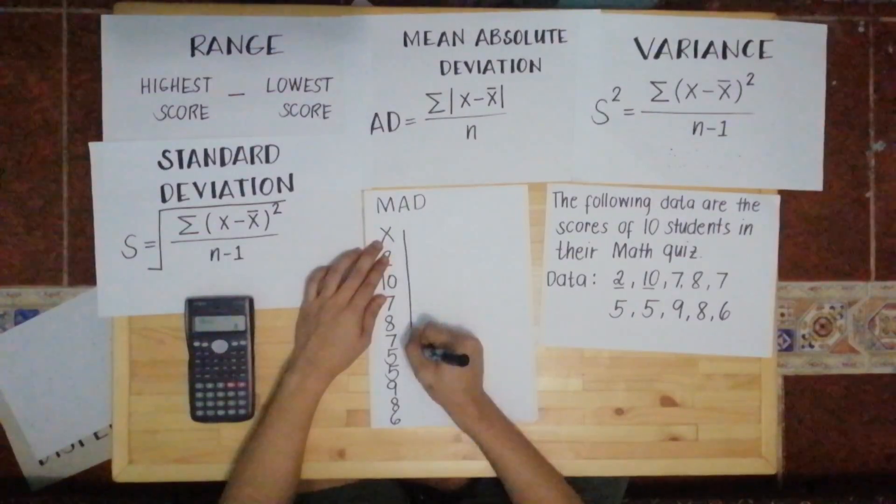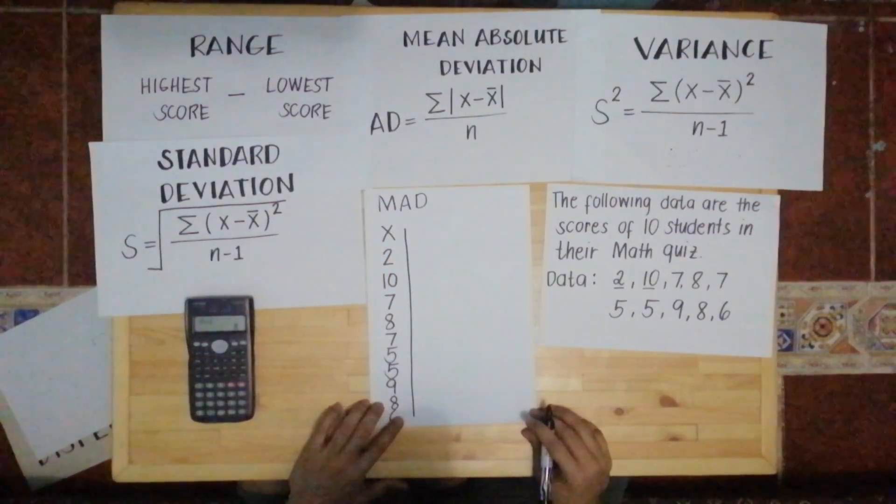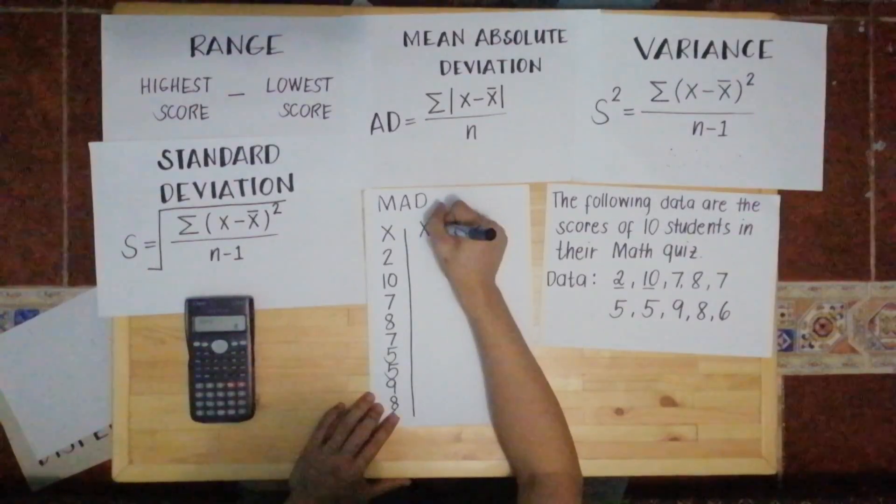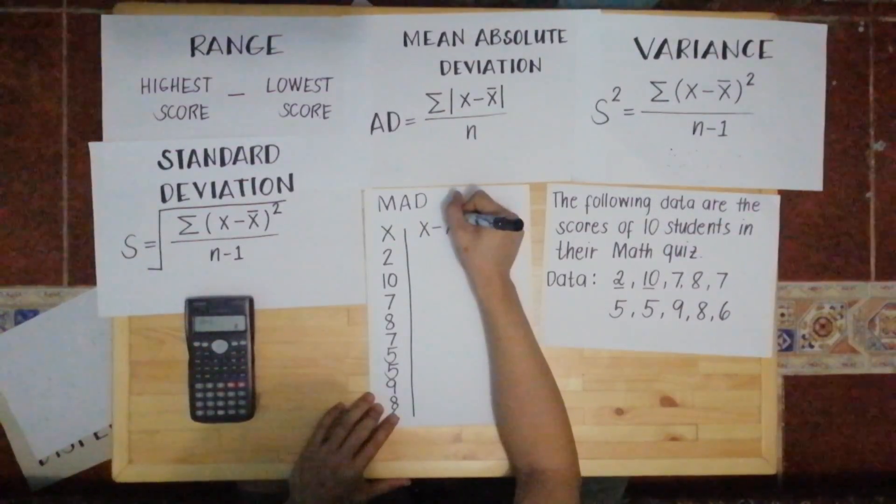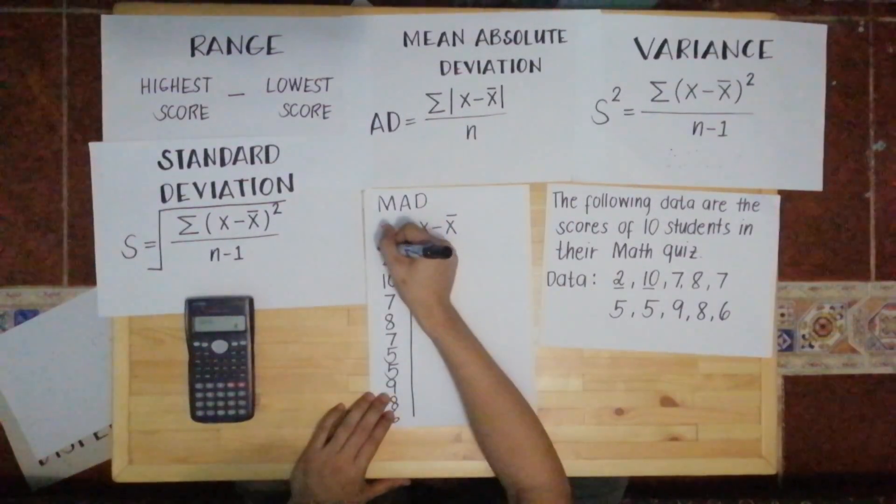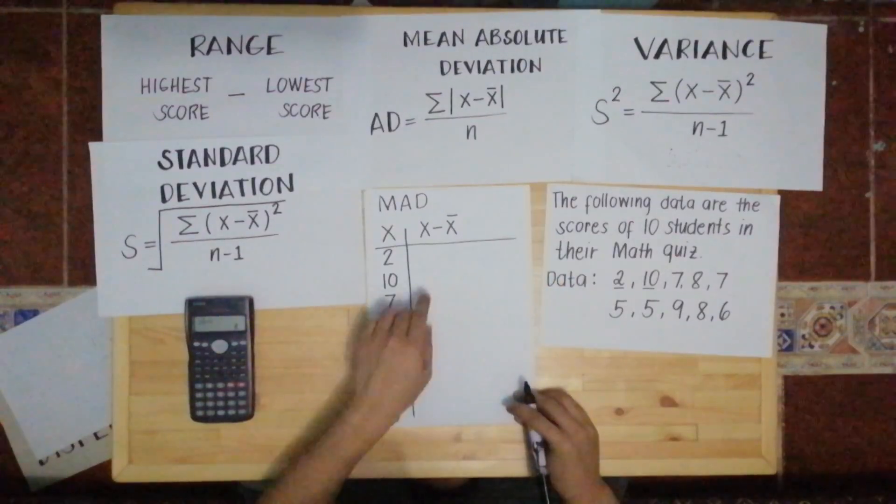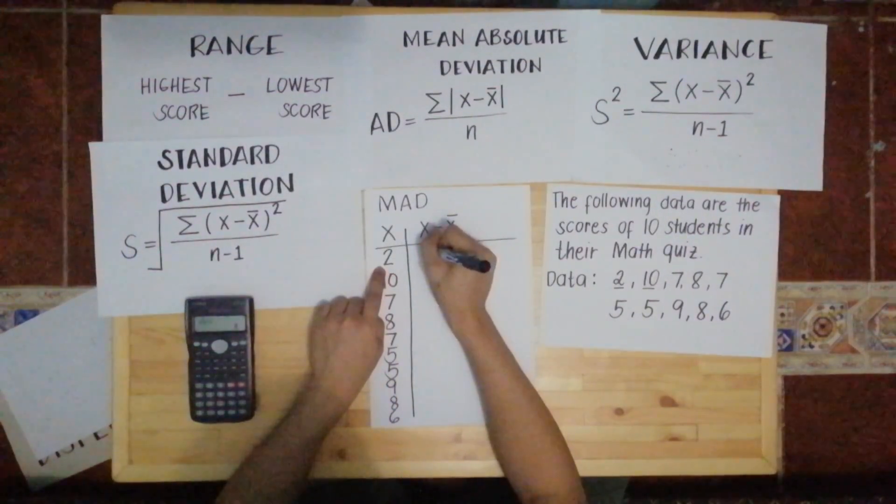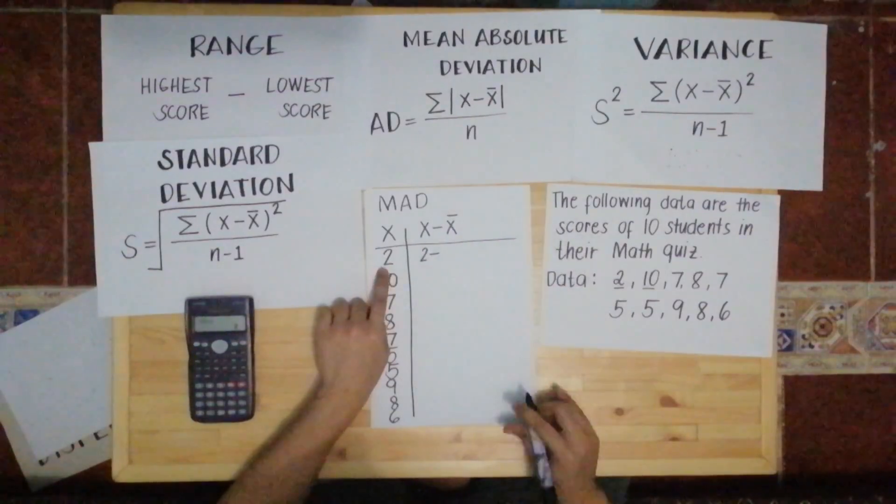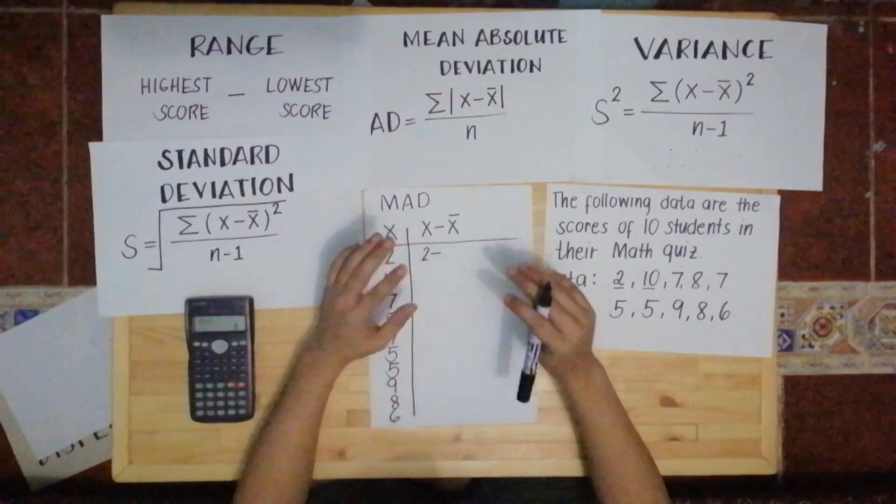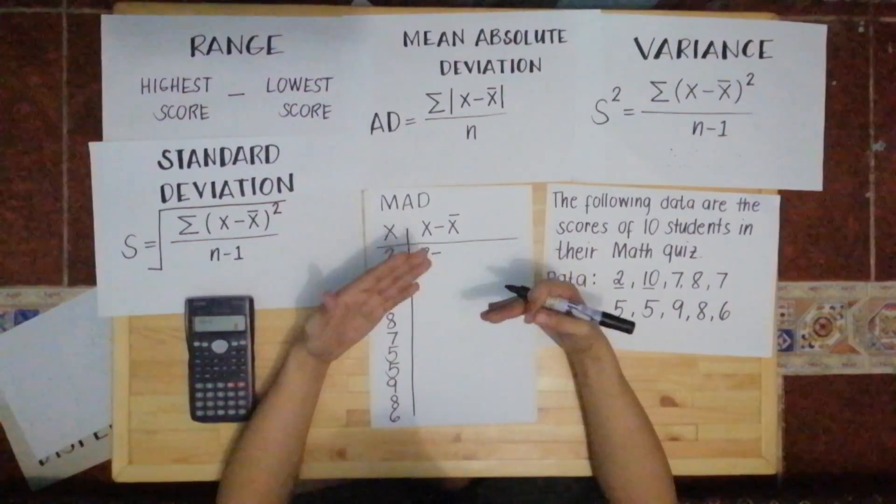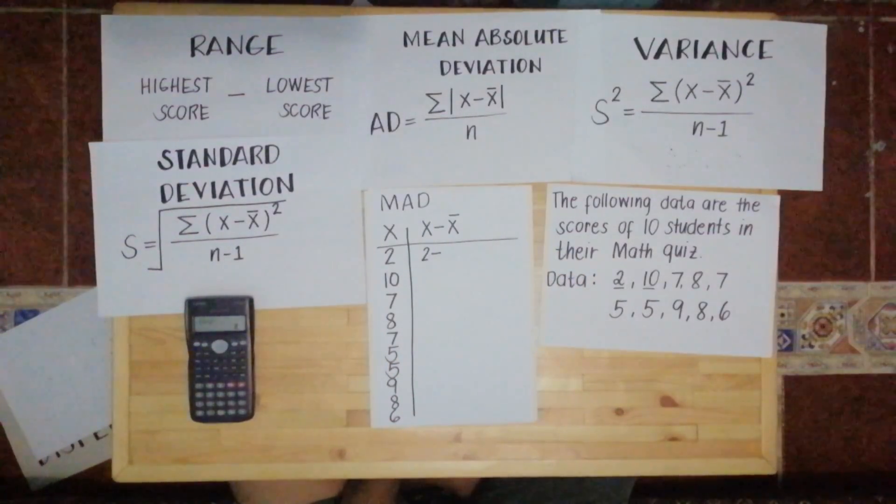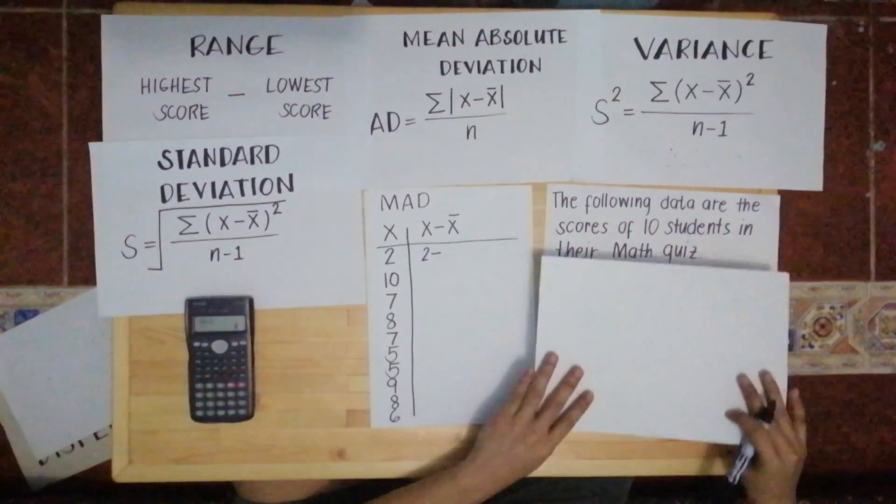Next, after this column, we'll create another column for X minus mean. The first X is 2, so we write 2 minus the mean. Since we haven't gotten the mean yet, we still have to get the mean first.